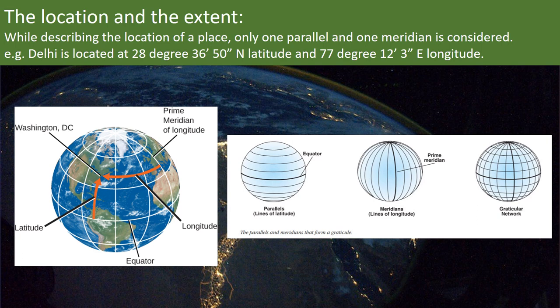While describing the location of a place, we need to consider only one parallel and one meridian. The picture describes that both a parallel and a meridian are required to locate a particular place on the globe. We can conclude it from the picture as a parallel and a meridian is used to locate Washington DC.